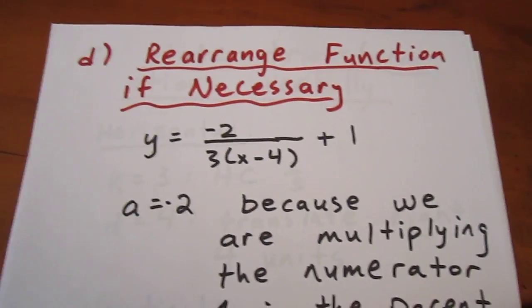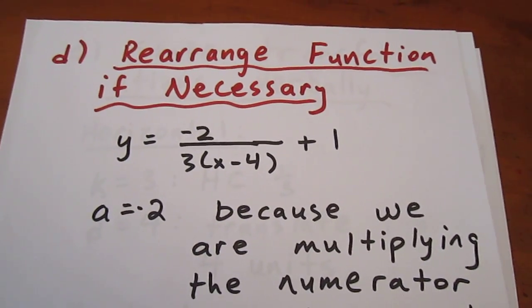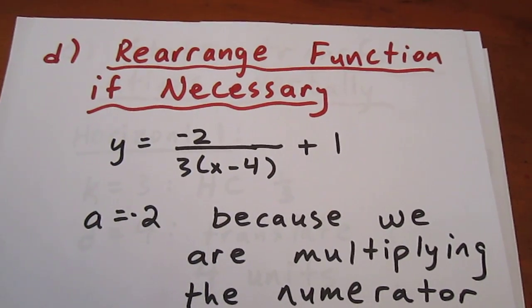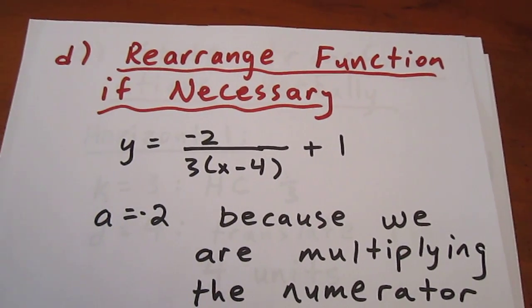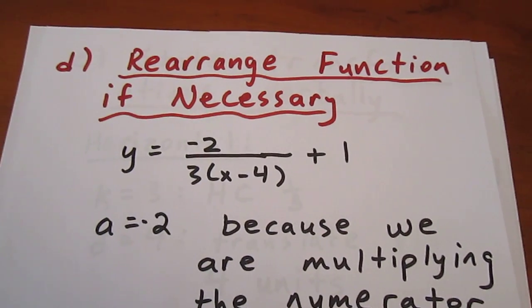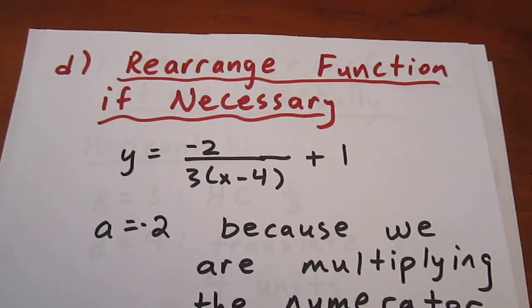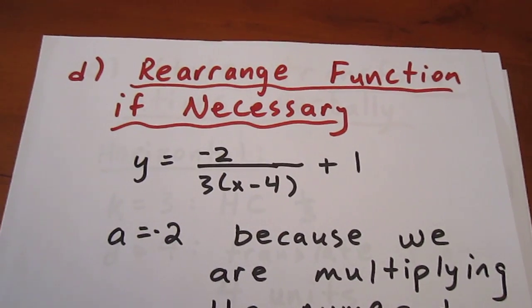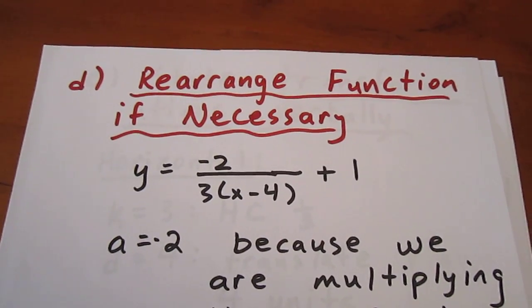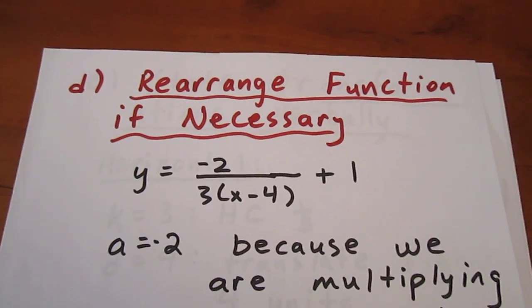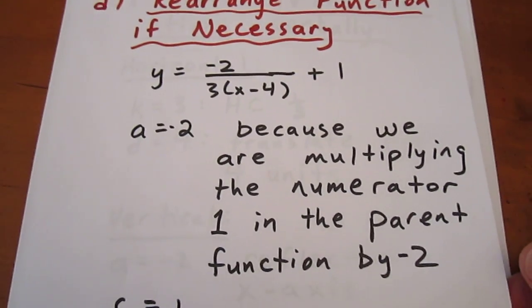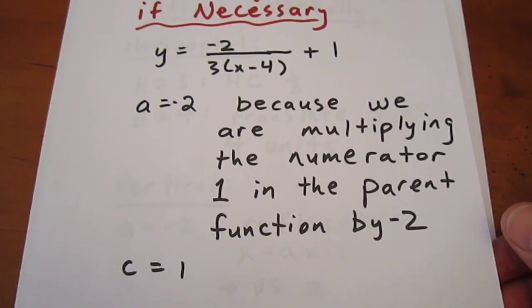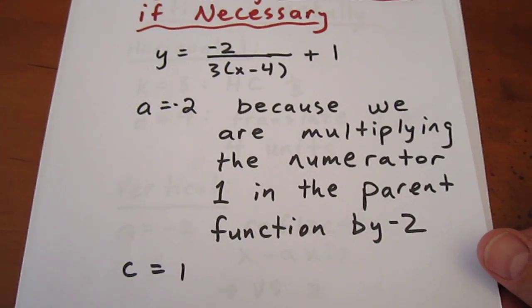We're then going to rearrange the function if necessary. We see that a equals negative 2, because when we have a numerator of negative 2, it's as though we had a numerator of 1 and multiplied the entire function by negative 2. And last, we have a c value of 1, because that's the quantity being added on the end.